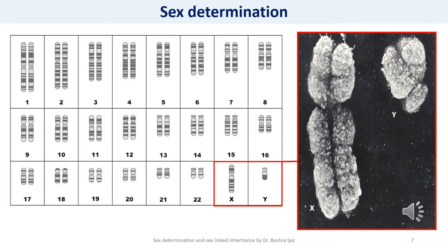Analysis of male and female insect chromosomes revealed that although most chromosomes were present in equal numbers in both sexes, there were one or two additional chromosomes unequally represented between the sexes. Analysis of additional species over the years revealed that chromosomal differences are primarily responsible for sex determination in most animals. In humans, as well as in many other animals and some plants, the sex of an individual is determined by the presence of sex chromosomes.